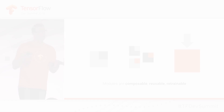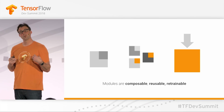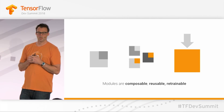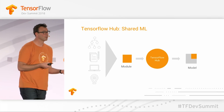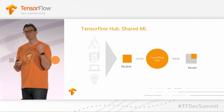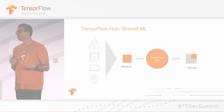One of the things mentioned in the talk was about these modules being composable, reusable, and retrainable. Composable means you can do things like add your own classification. For an image module, it doesn't include the classification from the model, so that's something you can compose with what you're building.